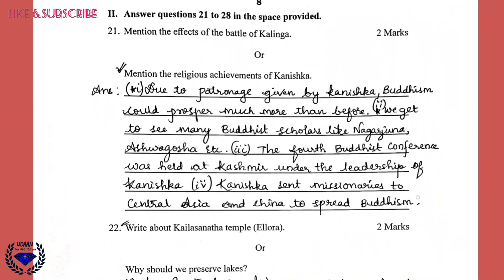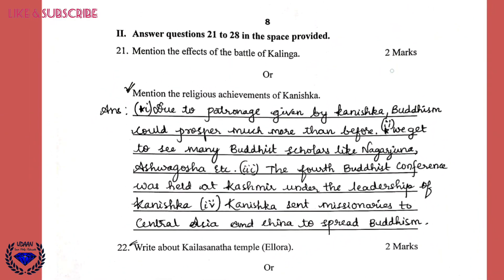Now the verbal questions begin from question 21, worth two marks each — five questions total. The question answered here is: mention the religious achievements of Kanishka. For two marks, write at least four points. Due to the patronage given by Kanishka, Buddhism prospered much more than before. Buddhist scholars like Nagarjuna and Ashvaghosa flourished. The fourth Buddhist conference was held at Kashmir under the leadership of Kanishka. Kanishka sent missionaries to Central Asia and China to spread Buddhism.